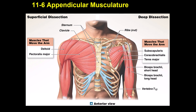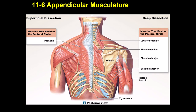The biceps muscle causes flexion of the shoulder and also flexion of the elbow. The trapezius is a large, superficial back muscle — depending on which part contracts, it causes extension of the neck, elevation or depression of the shoulder, or retraction of the shoulder. Levator scapulae elevates the scapula. Rhomboid minor and major attach to the medial border of the scapula and cause adduction of the scapula toward the spine.